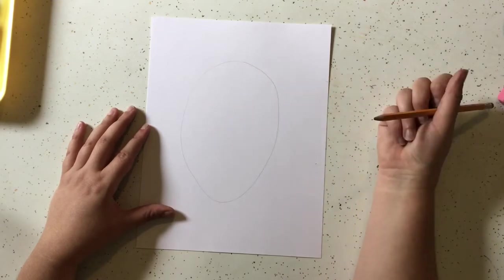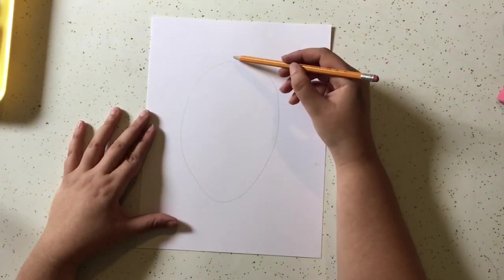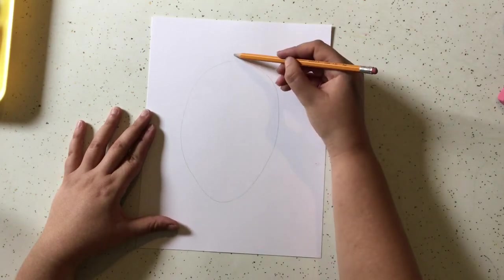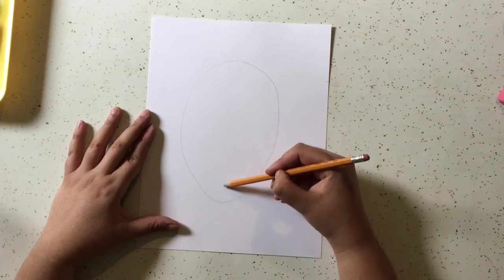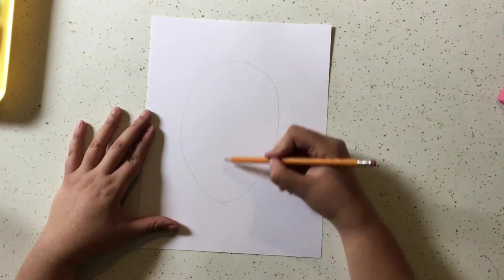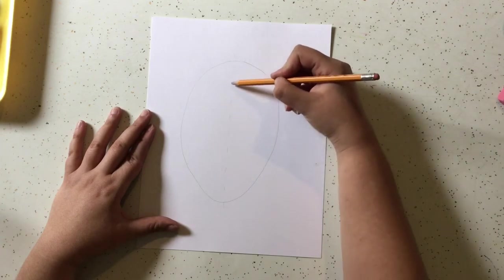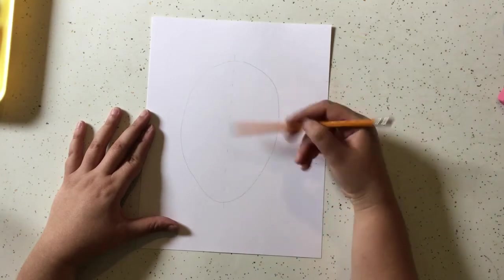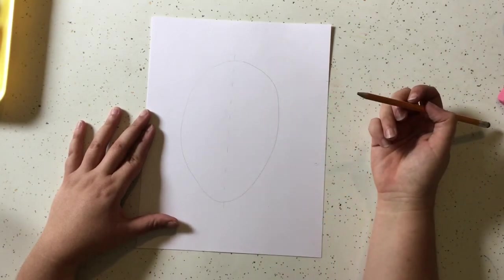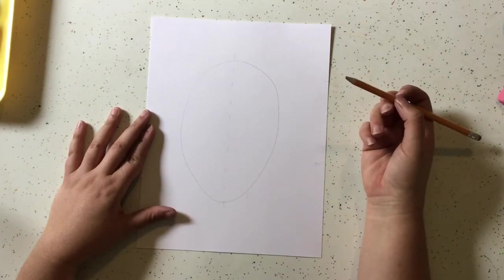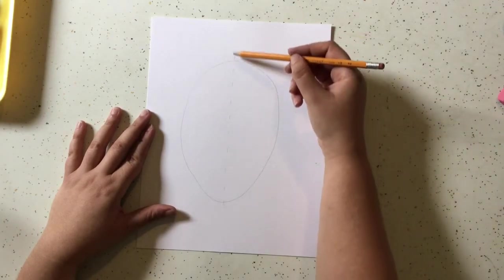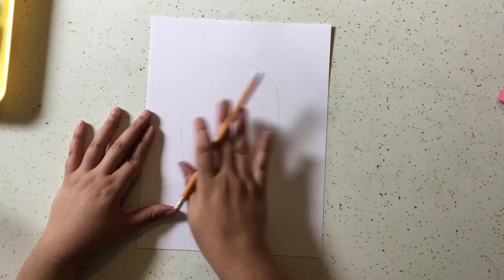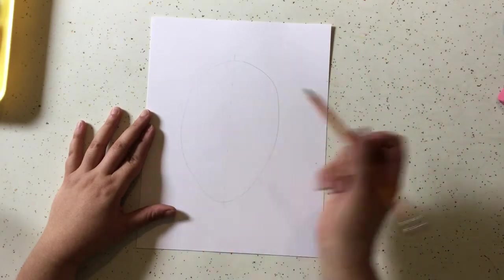So after you have your oval, next thing you're going to do is lightly draw in a vertical line right down the middle. Divide that face in half. You can draw a line all the way through. I kind of did a little dashed line, whichever works. This is just going to be kind of a reference guide for us to help us figure out where our eyes and our nose and mouth needs to go. That gives us a nice line of symmetry right down the middle, so that way our face will hopefully be symmetrical. It'll be the same on either side of that line.